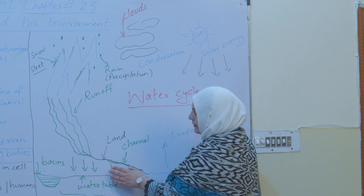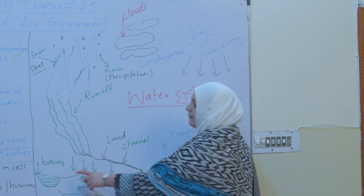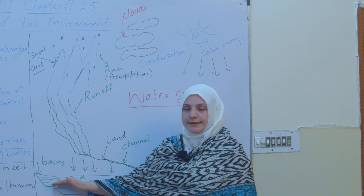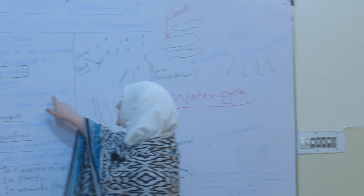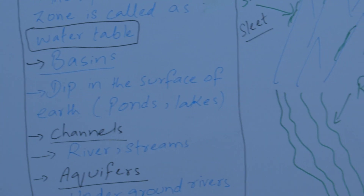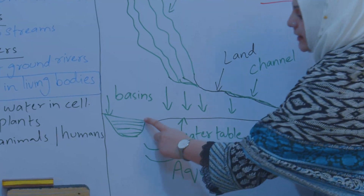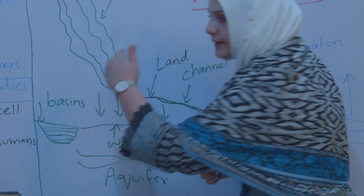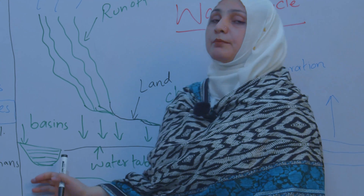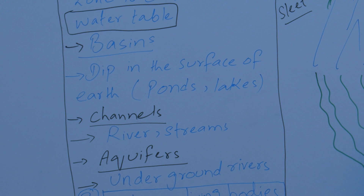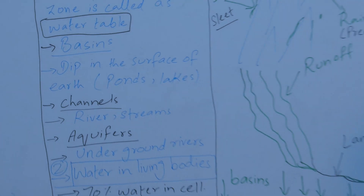Here we use two terminologies: one is called basins, and the other one is called channels. A basin is defined as a dip in the surface of the earth. You can see a continuous earth surface, but at specific intervals the earth's surface dips down — this depression in the surface of the earth is called a basin. In basins, water accumulates. Examples of basins include ponds and lakes — these are depressions in the surface of the earth.